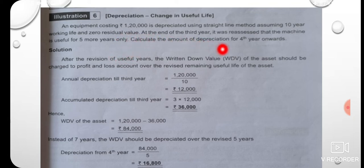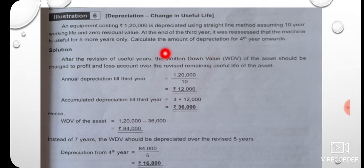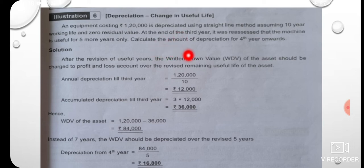At the end of the third year, it was reassessed that the machine is useful for 5 more years only. Calculate the amount of depreciation for the fourth year onwards.